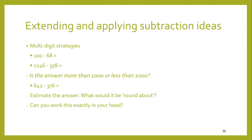We need to extend and apply subtraction ideas to larger numbers. Think about 100 minus 68, or 1,246 take away 358 — is the answer more than 1,000 or less than 1,000? In that second one, you're taking away 300 and something from only 1,200 and something, so the answer has to be less than 1,000. Always we encourage students to estimate the answer first — what might it be, roughly — and then try to work it out exactly.